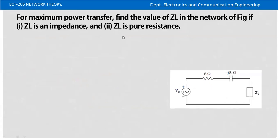For maximum power transfer, find the value of ZL in the network. The value of ZL is equal to the conjugate of the source impedance.